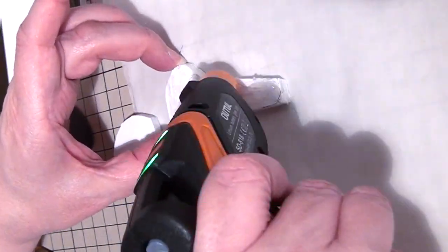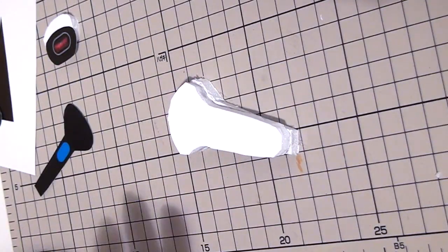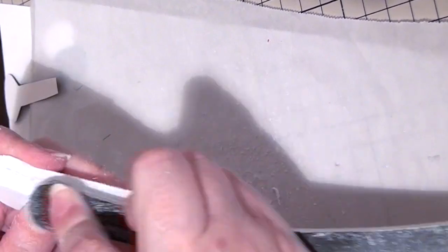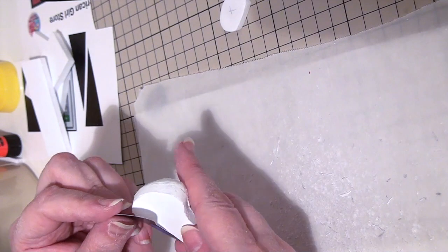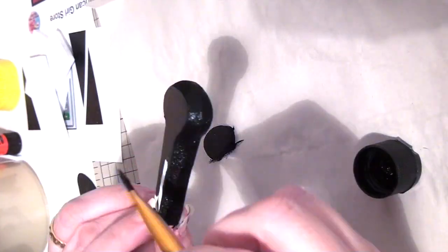Glue the two scanner pieces together. Sand it more round. Paint it black and let it dry.